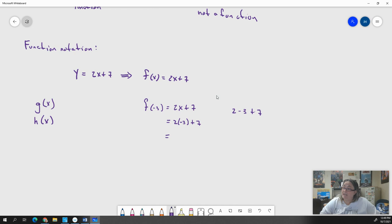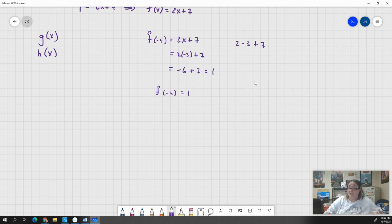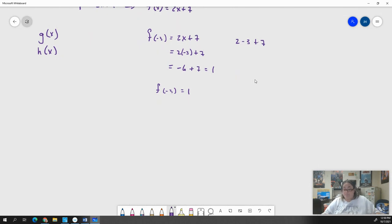So 2 times negative 3, well, that's just negative 6. Negative 6 plus 7 just equals 1. So we could actually say, if we wanted, that f of negative 3 equals 1. And that's just notation. That's just how you read it. What you're going to get for homework, all of that is going to be in evaluating functions. So you're going to get stuff that's going to give you a function. And then you are going to input values for those functions.